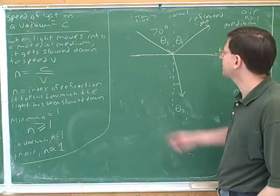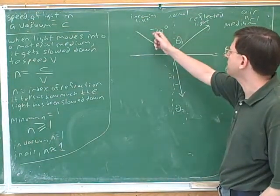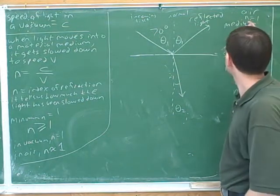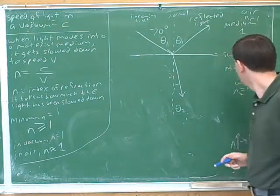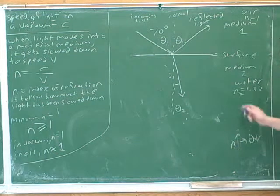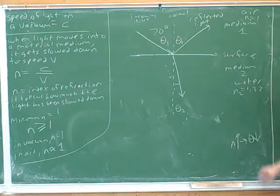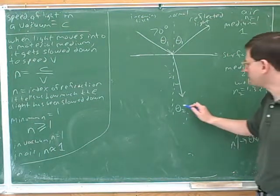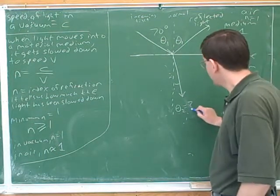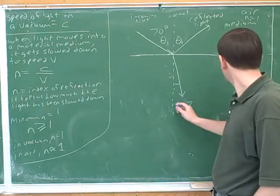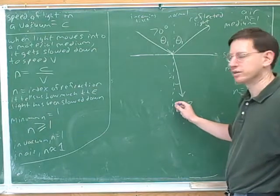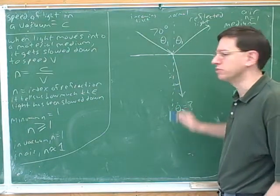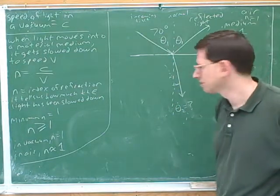We know that the light is coming in at a 70 degree angle through the air into water, which has an index of refraction of 1.33. The question is, how big is the angle going to be in the water — how big is theta 2 going to be?